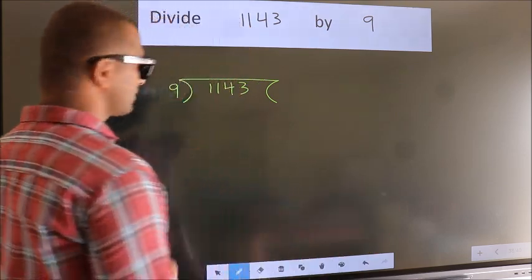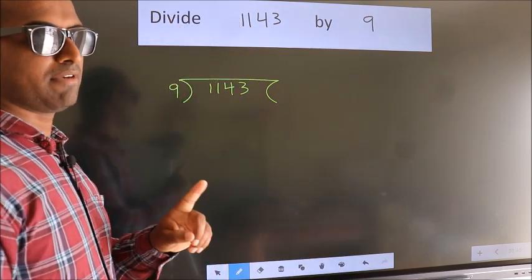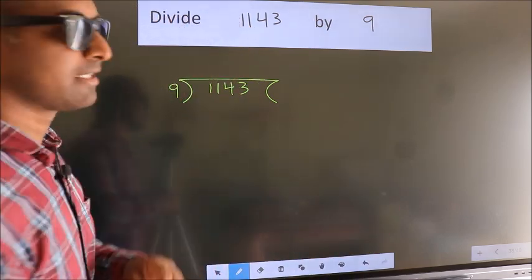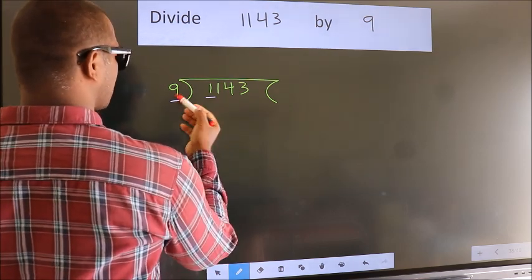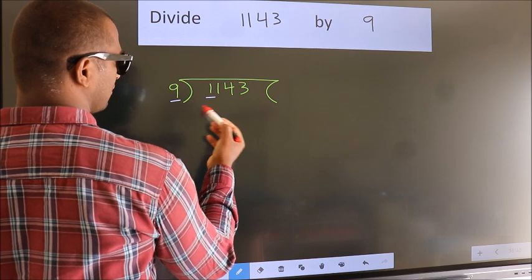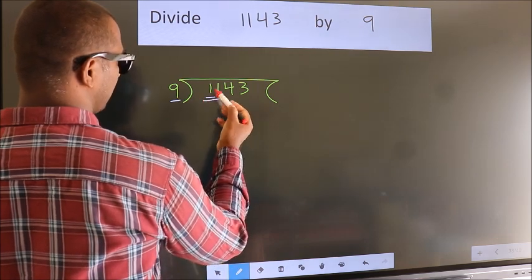This is your step 1. Next, here we have 1, here 9. 1 is smaller than 9, so we should take two numbers: 11.